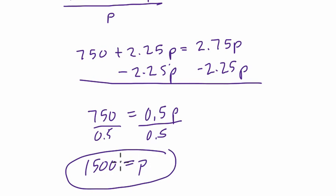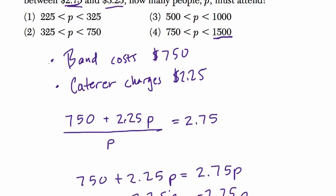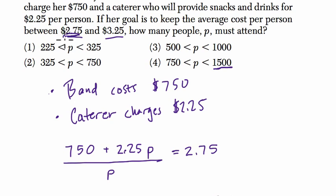Now what does this mean? If 1,500 people show up, well, then the cost will be low. It will be $2.75. And the only range that has this in it is choice four.